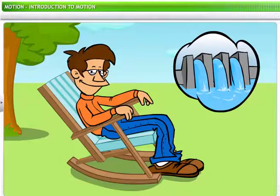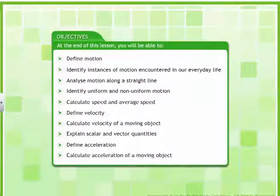These answers will help you control motion and harness it for constructive purposes, like in a hydroelectric dam. In this lesson, you will learn about motion and related quantities. At the end of this lesson, you will be able to define motion, identify instances of motion encountered in our everyday life, analyze motion along a straight line, identify uniform and non-uniform motion, calculate speed and average speed, define velocity, calculate velocity of a moving object, explain scalar and vector quantities, and define acceleration and calculate acceleration of a moving object.